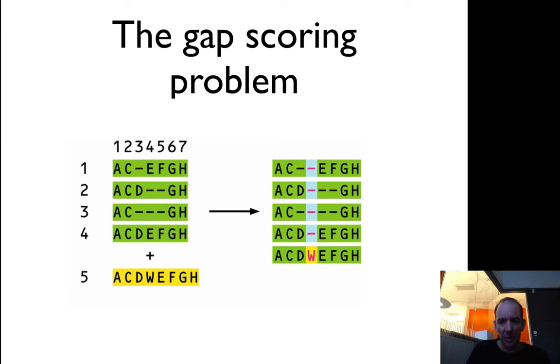This is the problem with how to score the gaps. You have four sequences aligned, then you want to align the fifth one. You can see it's obvious that you want to align the W in the fifth sequence to the region with gaps in the middle between positions three and four. But if you align to sequence four, you introduce a new gap, and in the other one you're extending a gap. So do you add a gap opening cost or gap extension cost?